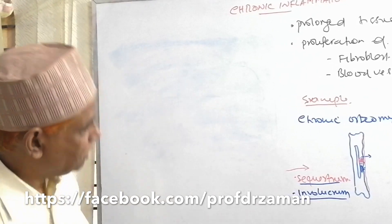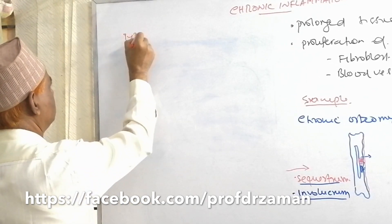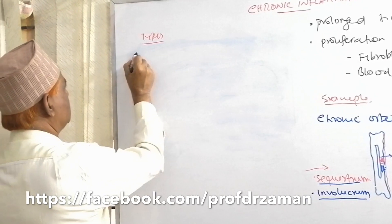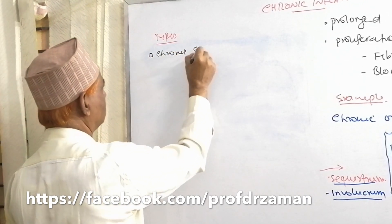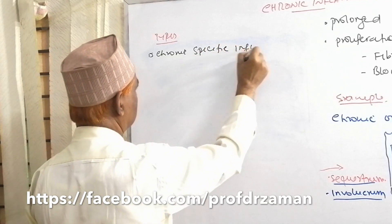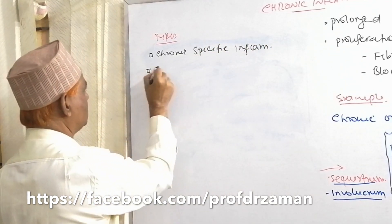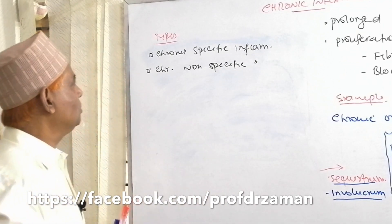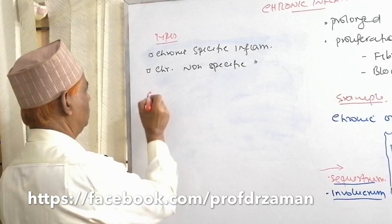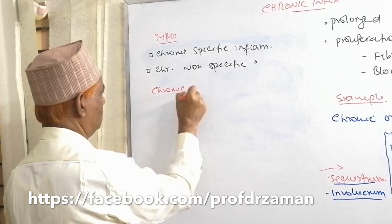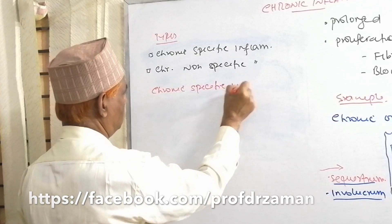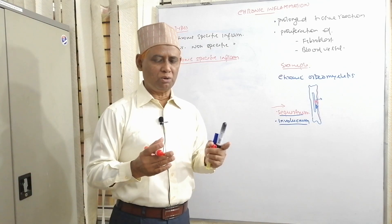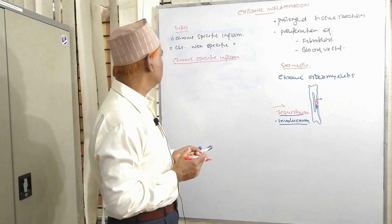Now come to types of chronic inflammation or classification of chronic inflammation. One is chronic specific inflammation, and another is chronic non-specific inflammation. The chronic specific inflammation is that type of chronic inflammation where the tissue changes are very much specific for the causative agent.